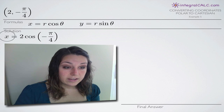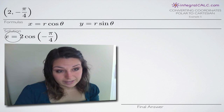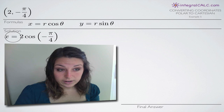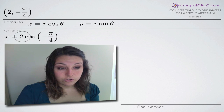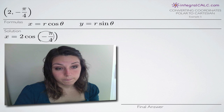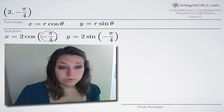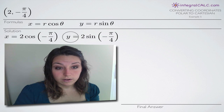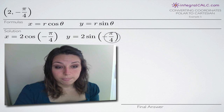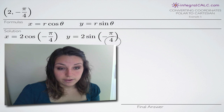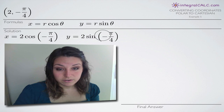For the x equation, plugging in two for r and negative pi over four for theta gives us x equals two cosine of negative pi over four. Similarly, plugging those same values into the y equation gives us y equals two sine of negative pi over four. That is how we set up our two equations to find our rectangular coordinates.